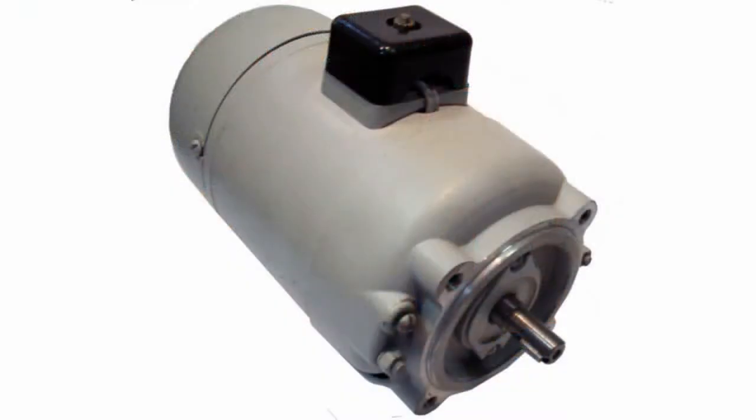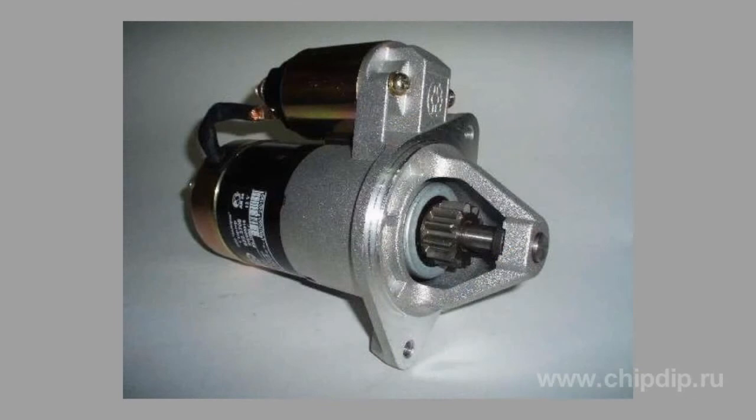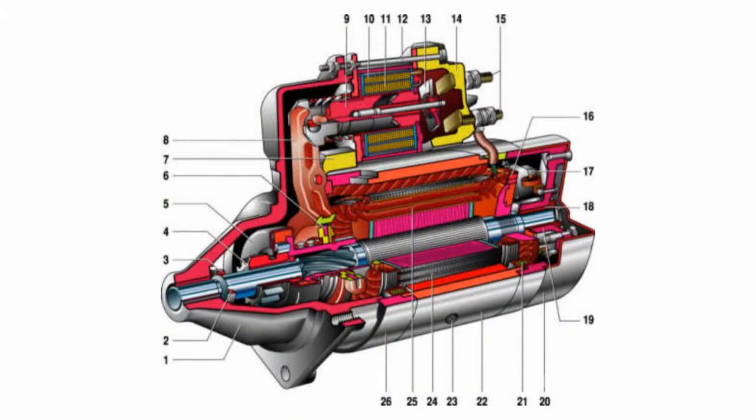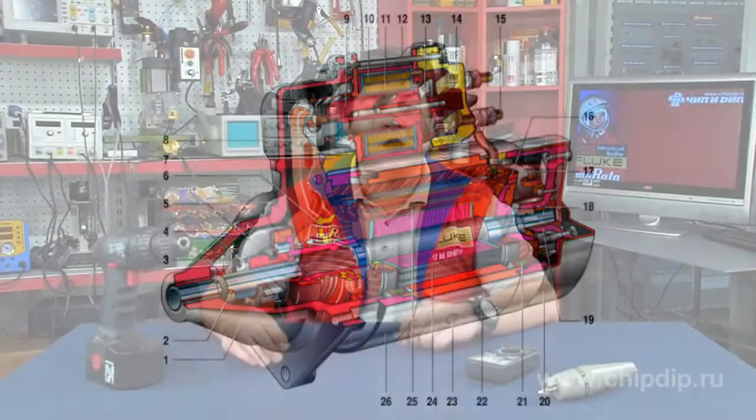Commutator motors of constant current can be of the following types: with permanent magnet excitation; with parallel connection of drive winding and anchor; with series type connection of drive winding and anchor; and with mixed connection of drive winding and anchor.